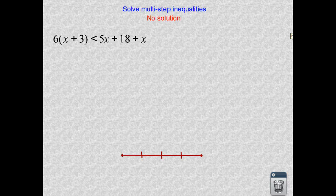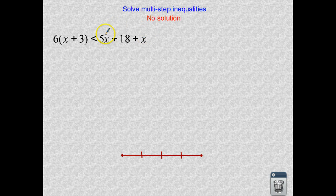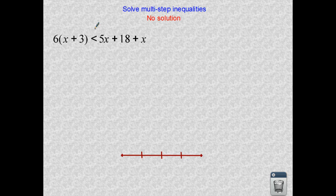The last case that we might have, another special case, is something called no solution. So there might be integers on the number line that will never work. No matter what integer you put in for x, all of these x's would be the same integer. Whatever that integer is that you pick on the number line will never work. And let's see what no solution looks like.